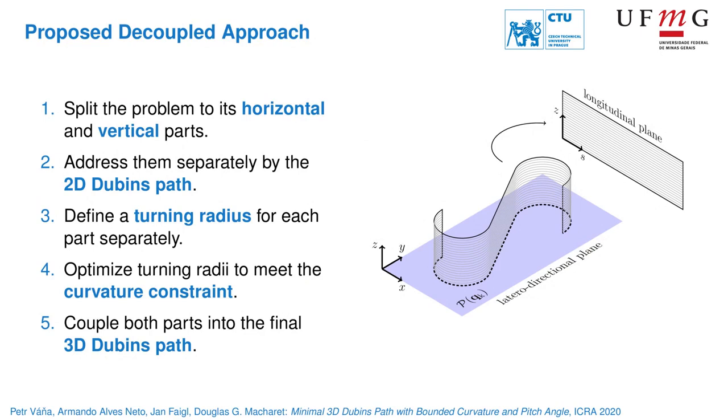The proposed solution is based on the decoupled approach that splits the problem into the horizontal and vertical parts that are computed separately. The only connection between both parts is through turning radii that are defined separately.